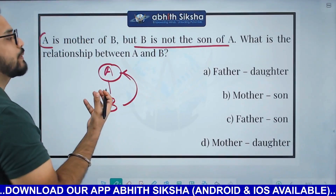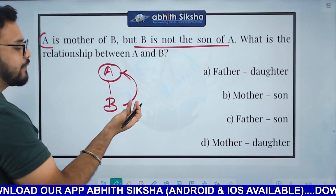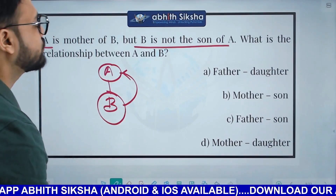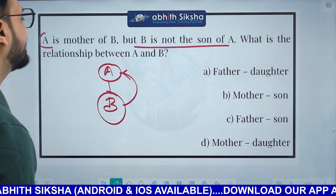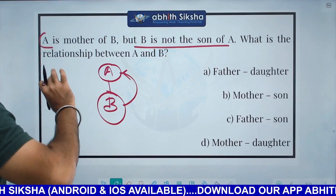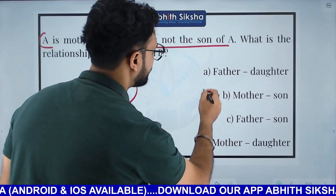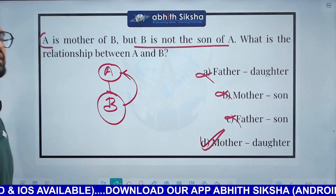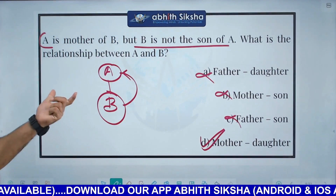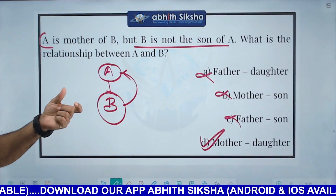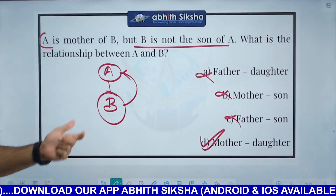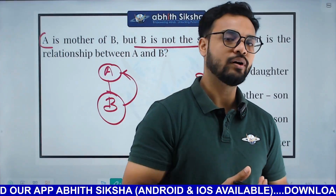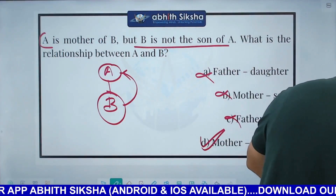The next question is about blood relationships. What is the relation between A and B? A and B are related as mother and daughter. This is a blood relationship question about how to determine relations between family members.